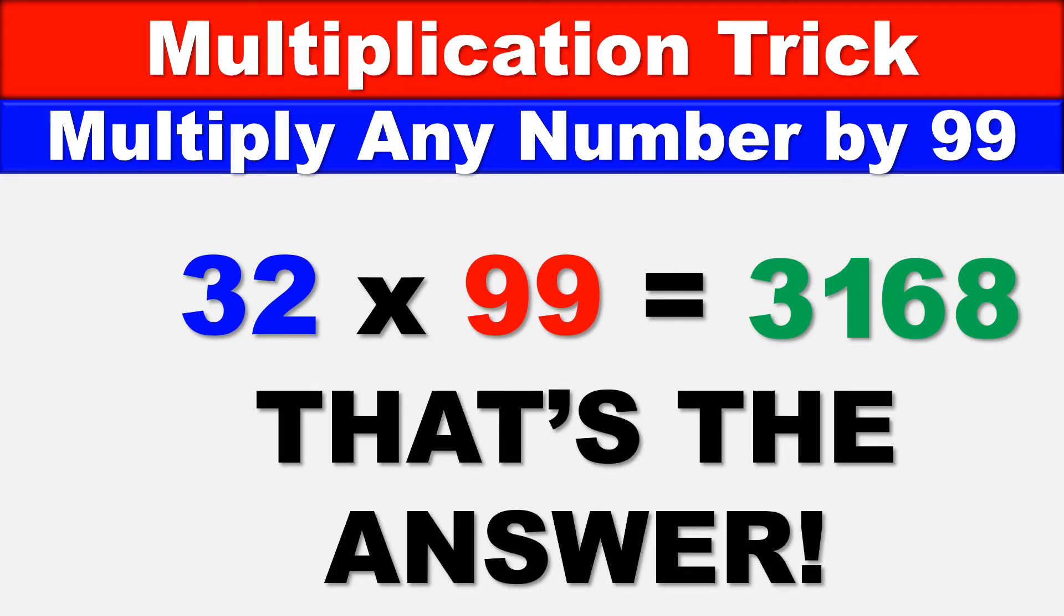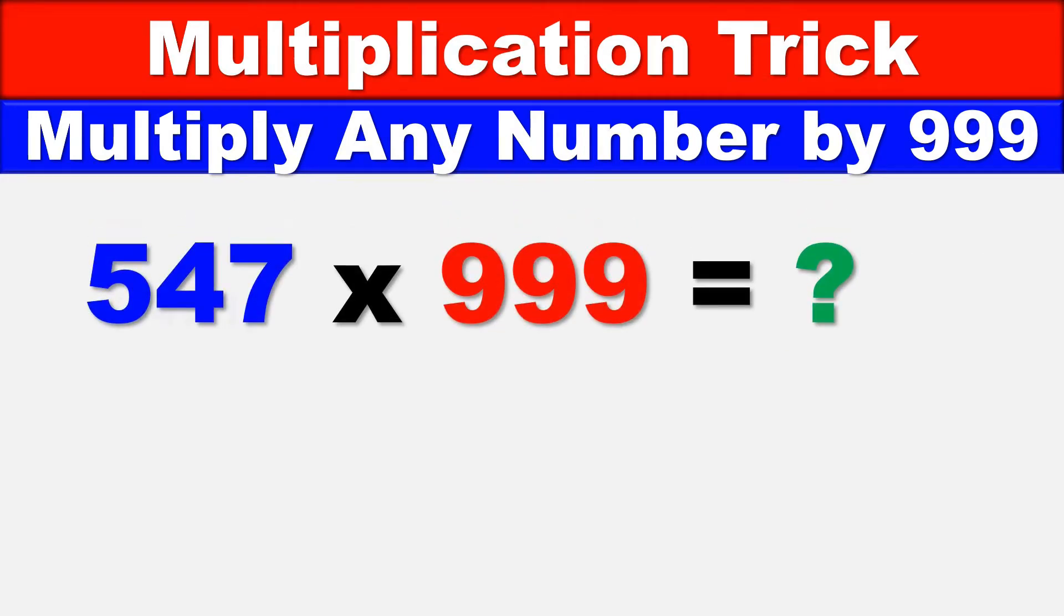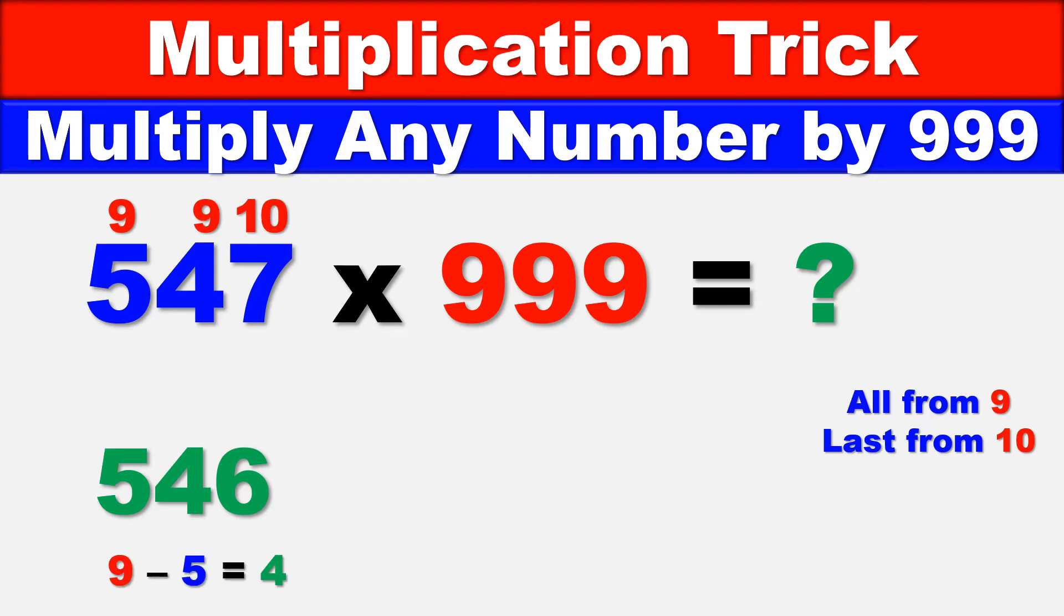Let's take a look at our second example: 547 times 999. This follows in much the same way. First, 547 minus 1 equals 546 - that's the first part of our answer. The second part follows the Vedic rule: all from 9, last from 10. So 9 minus 5 is 4, 9 minus 4 is 5, and since 7 is the last digit, we subtract 7 from 10, so 10 minus 7 is 3. The last part is 453, so 546,453 is the answer.